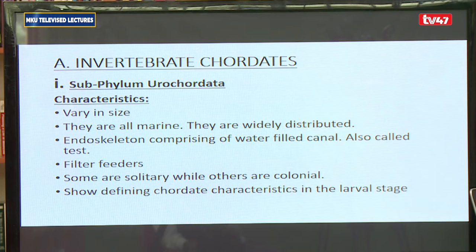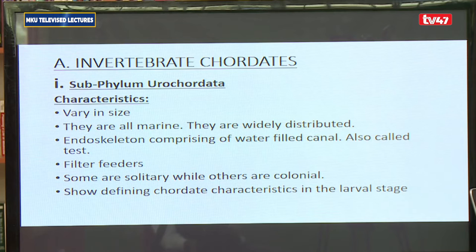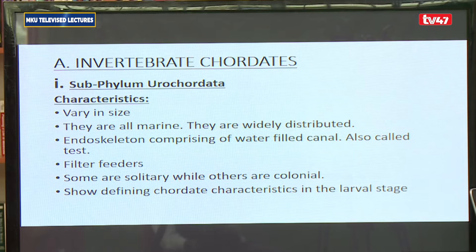For the urochordates, they tend to be filter feeders, meaning they feed on food material that is floating in water. They take in the food material along with the water and then extract the food material from the incoming water. Some of them can move, others cannot. Some exist as individual organisms — we say they are solitary — while others tend to exist in colonies and are colonial, meaning many of them existing together and relating to one another.